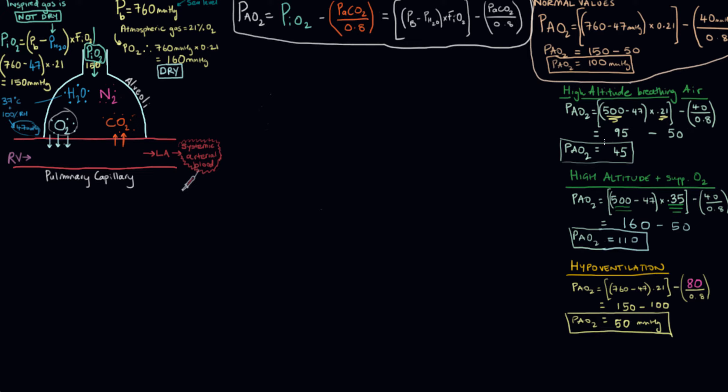Okay, so just by going to altitude, with normal lung mechanics, normal lung physiology, this person's PO2 is going to be 45, which is below half of what it should be.